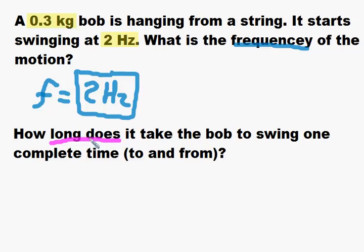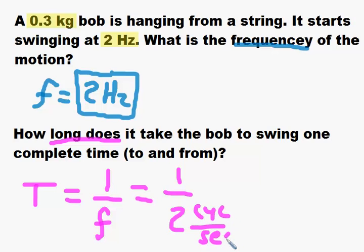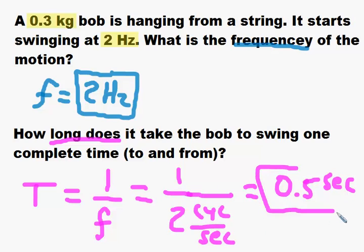Now I want to find how long — how much time does it take to swing one complete time? That's another word for period — period is how long it takes. We have frequency, so we can use that to find the period. The period is 1 over the frequency, or 1 over 2. This is cycles per second, so 1 over 2 is a half — 0.5 — and flipping it gives us seconds per cycle: 0.5 seconds per cycle. In other words, it takes half a second for it to swing one complete time.